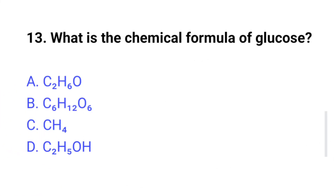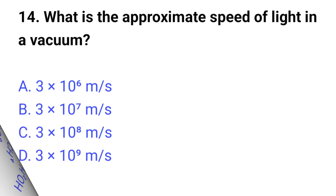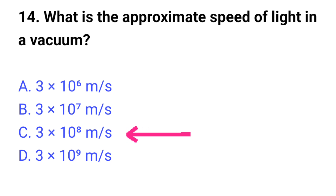Question number thirteen: what is the chemical formula of glucose? The right answer is option B, C6H12O6. Question number fourteen: what is the approximate speed of light in a vacuum? The right answer is option C, 3 × 10^8 meters per second.